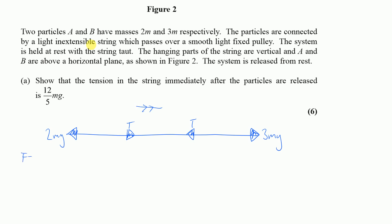Now I resolve using F = ma. Taking all forces towards the right: 3mg plus tension, minus the other tension, minus 2mg equals the total mass (2 + 3 = 5m) multiplied by acceleration. The tensions cancel each other out, so mg = 5ma. The masses cancel and I find acceleration = g/5.